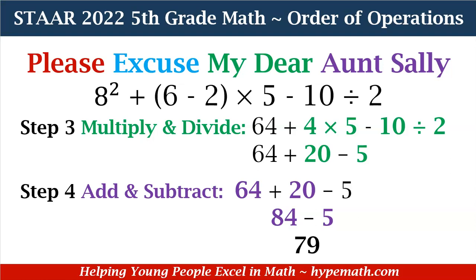And last, we have addition and subtraction from left to right. 64 plus 20 is equal to 84, minus 5 is 79.